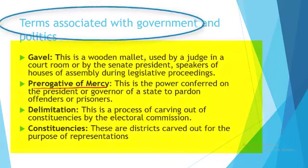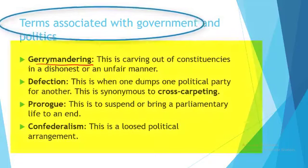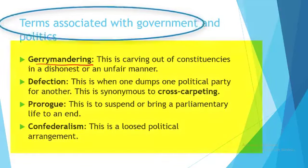Then we have constituency, which means the districts carved out for representation during elections. Then there is gerrymandering — gerrymandering is simply carving out constituencies where they are not supposed to exist. The aim of gerrymandering is electoral fraud or electoral malpractice — carving out bogus constituencies for dishonest reasons.